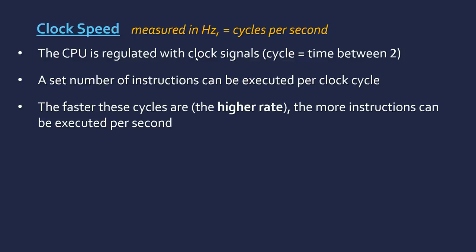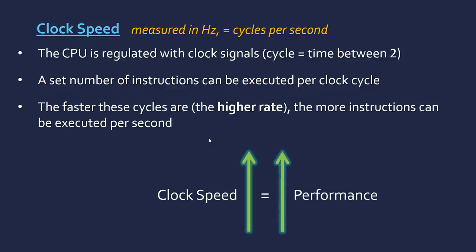The faster these cycles are — the higher the clock speed, the higher the rate — the more instructions can be executed per second. Because you're dealing with a set number of instructions per cycle, if you have more cycles per second, you're going to execute more instructions per second. This means that increasing the clock speed also increases performance. This is why people overclock their processors — you can increase the clock to overclock your system and it will increase the speed. Obviously there's a limit; you can't do this infinitely because it's not designed to work at really high speeds and it produces more heat.